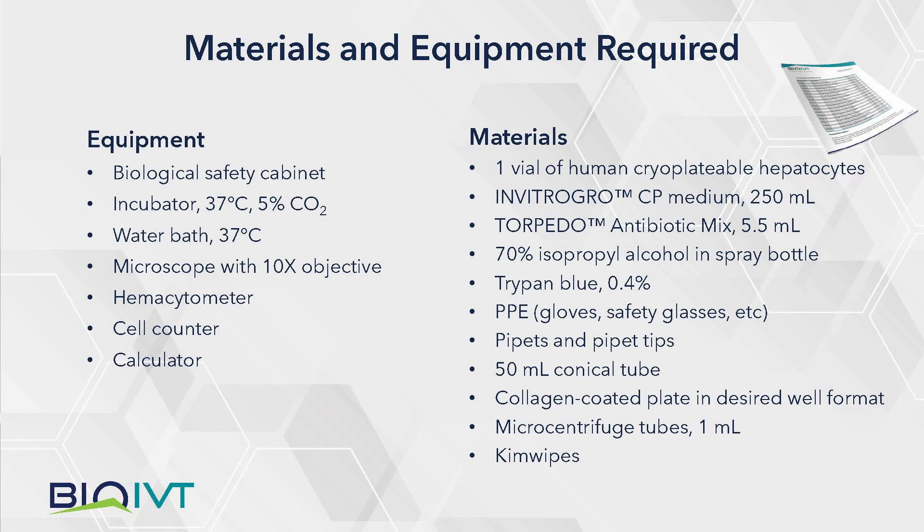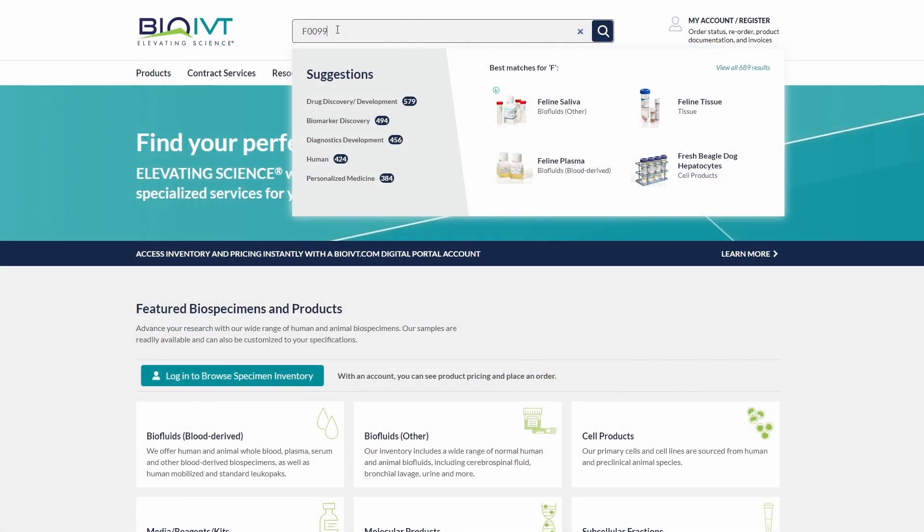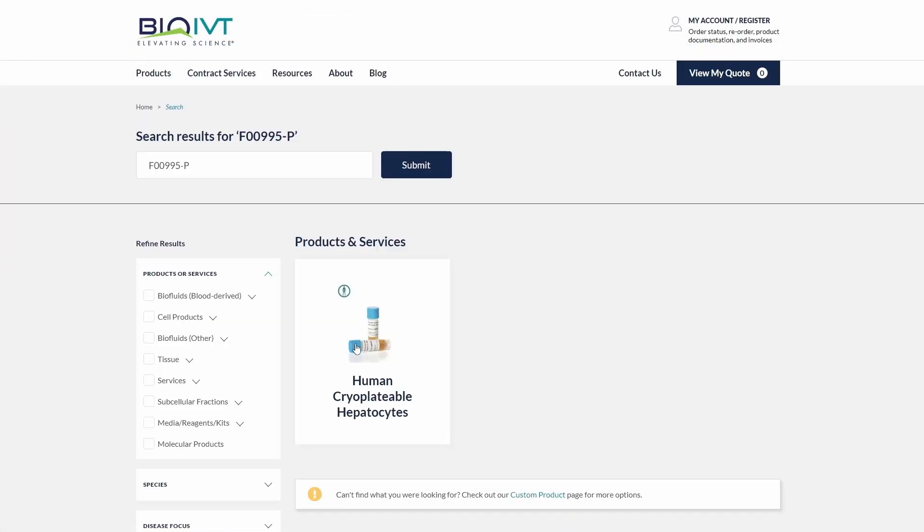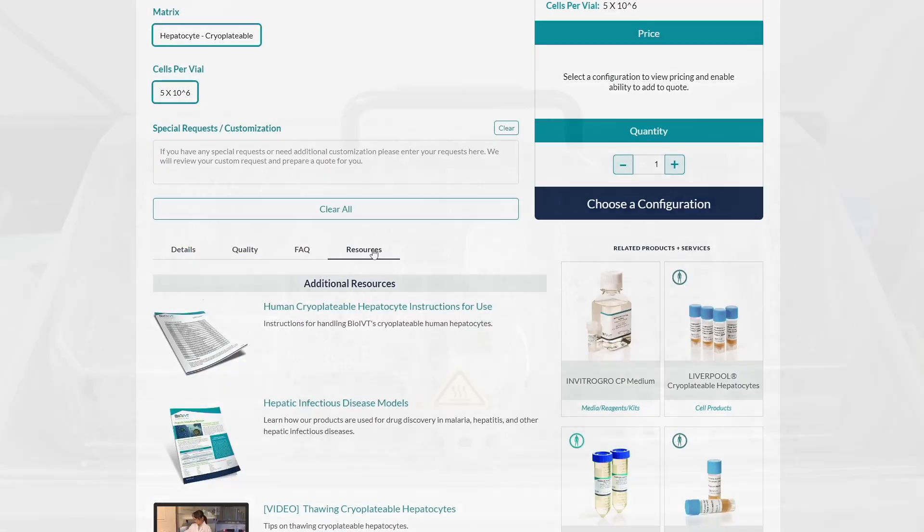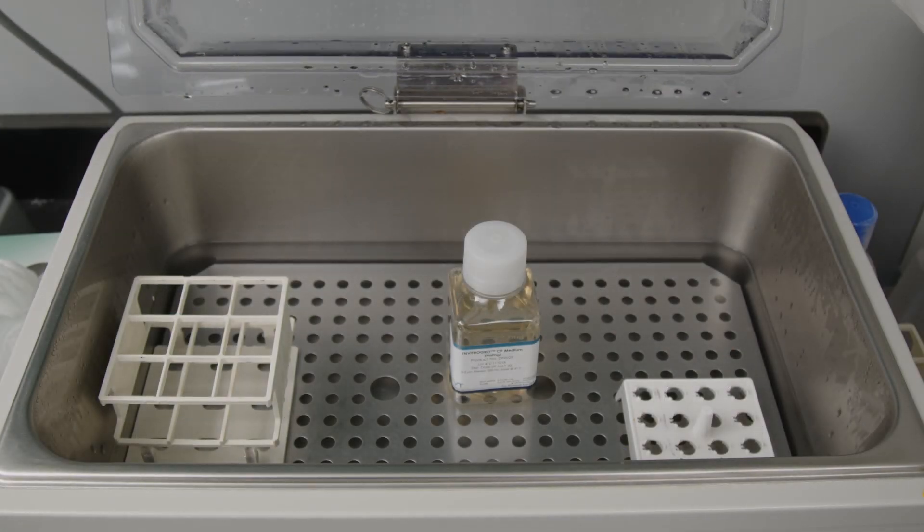First, review the instructions for use guide for the hepatocytes, then gather the necessary materials and equipment. Instructions for use guides can be found on Bio-IVT.com in the Resources tab for each hepatocyte product.